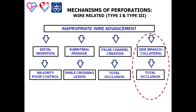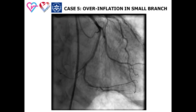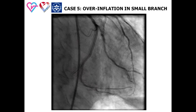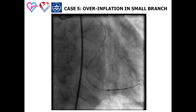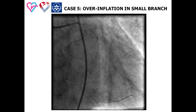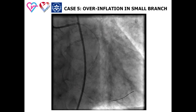Perforation can result from inappropriate assessment of wire position in a side branch or small distal/collateral vessel — advancement of the wire can result in distal vessel penetration (scenario one). Additionally, inflation of a balloon of greater diameter than the vessel in this position can result in vessel rupture and perforation (scenario three). In one case, a sub-branch of the distal vessel was mistaken for an occluded main vessel; balloon inflation was performed, resulting in vessel rupture with perforation — scenario three.